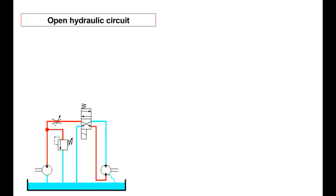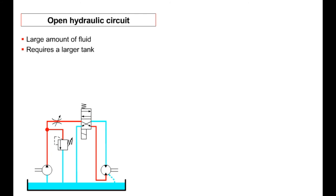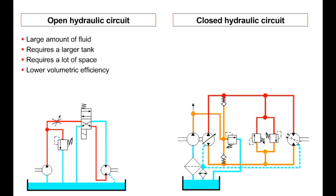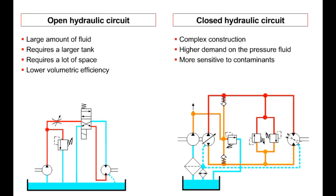In engineering there are no advantages without disadvantages. In an open hydraulic circuit, a large volume of fluid must be circulated, necessitating a larger tank and sufficient installation space, and the volumetric efficiency is less than in closed systems. A closed circuit requires more complex construction — for example, an additional feed pump is necessary. Since pressure fluid is supplied directly from the consumer back to the pump, it has little opportunity to cool, leading to strong operational demands on the fluid. Furthermore, contaminants taken up by the pressure fluid may enter the hydraulic pump.